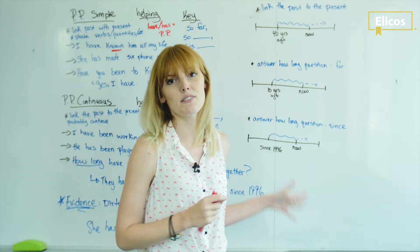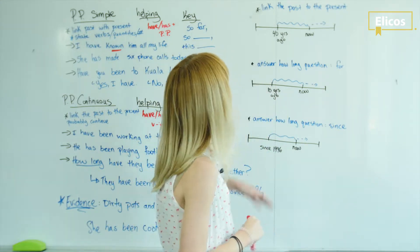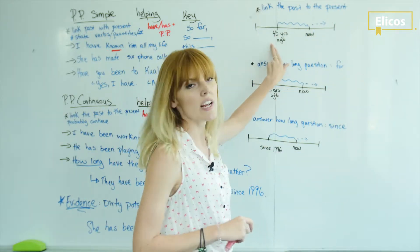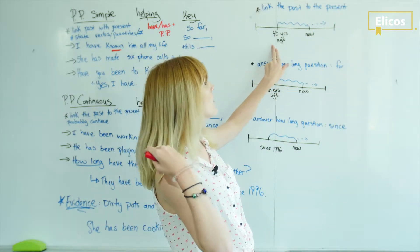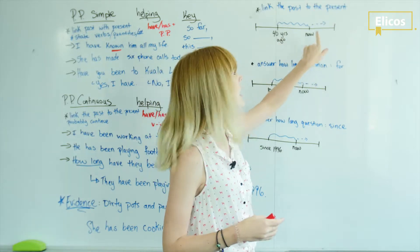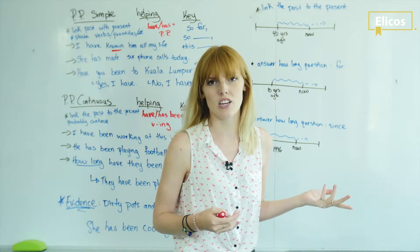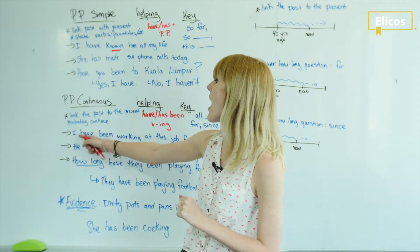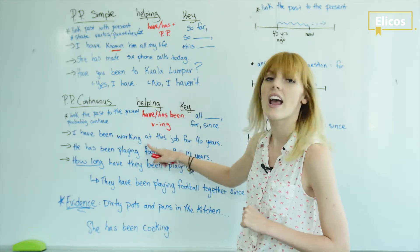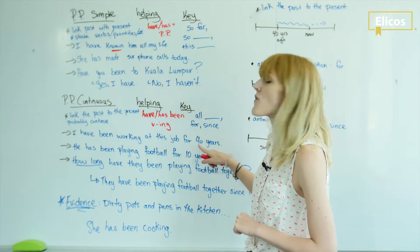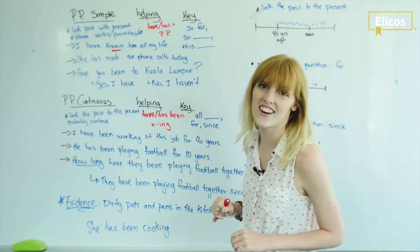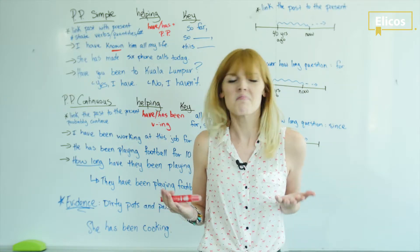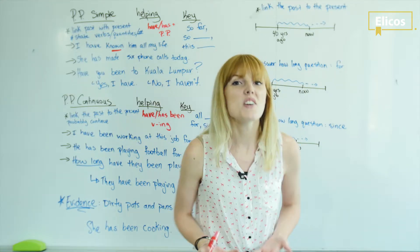So before we go through this, let's take a look at these different timelines over here. We link the past to the present. We have 40 years ago until now, and again it could continue afterwards. Let's take a look at our example. I have been working at this job for 40 years. Now are they retired? Have they finished? No, not yet. So it's likely that they could continue working there for even longer.